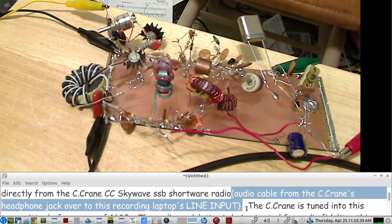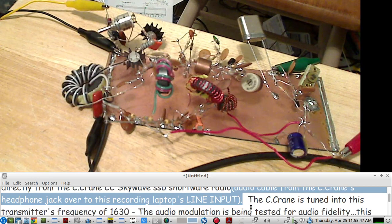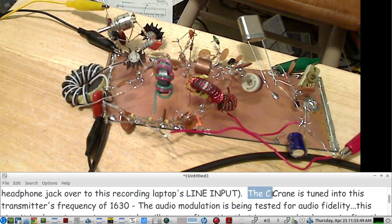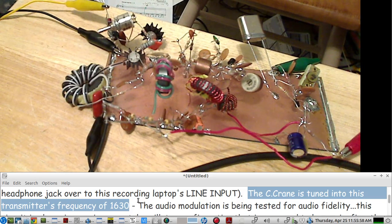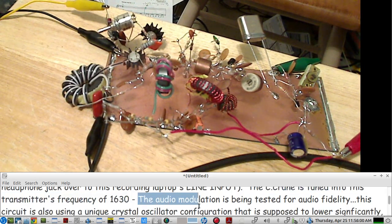On the mix bus I only use one processor, the FabFilter Pro-L 2 limiter. The reason I use that is because of the readout that it gives. It gives a LUFS readout which is really important. I try to keep the sound of the podcast the same from episode to episode, as well as the volume.